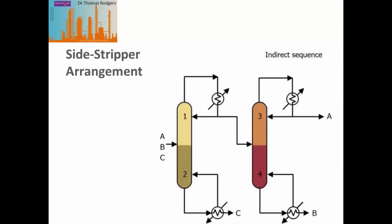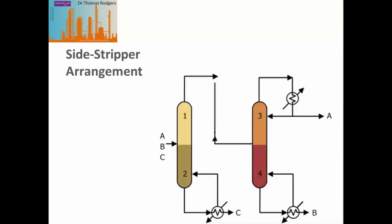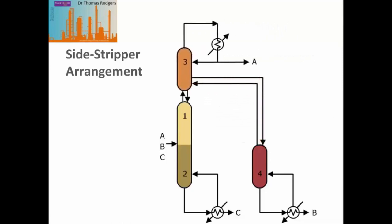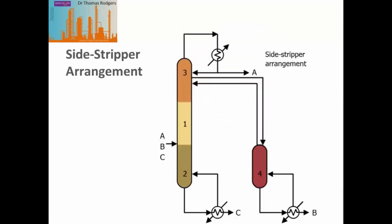The side strip column is a thermally coupled rearrangement of an indirect sequence. In this case, we remove the condenser from the top of the column, take a liquid from the second column and the vapour from the first column and put them into the second column. This allows us to shift section 3 of our second column to the top of our first column, leaving just the bottom half of the second column by itself. What we've done is removed the condenser from one of the columns, thus reducing the energy requirements because we have one less condenser.